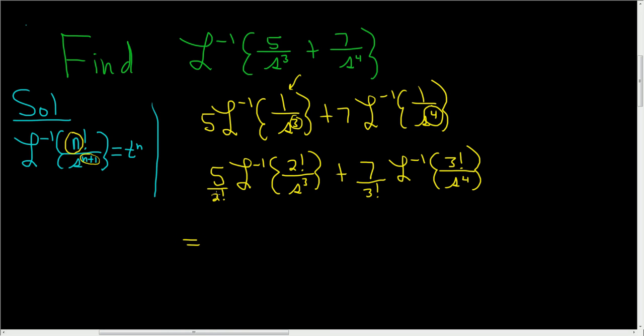So this is equal to, well, 2 factorial is 2, so 5 halves. And this whole piece here, our n here is 2. There it is, there's our n. So it's t to the n, so it's simply t squared.